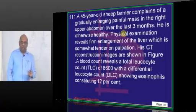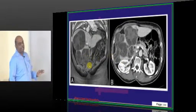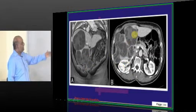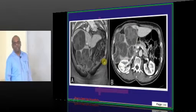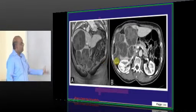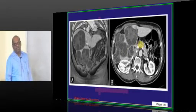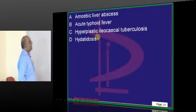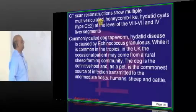A 45-year-old farmer by occupation complains of a gradually enlarging painful mass and you have been given abdominal imaging. What do you see? Multi-loculated appearance — Echinococcus granulosa is suspected. Hydatidosis is the answer.